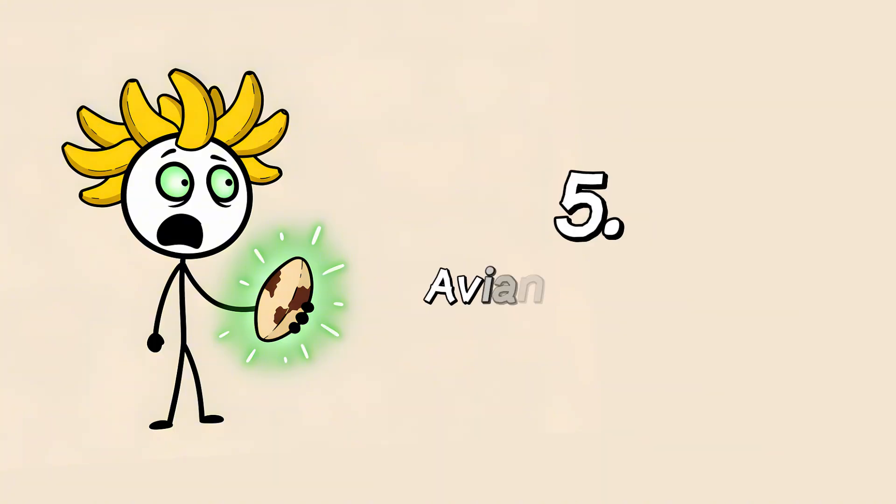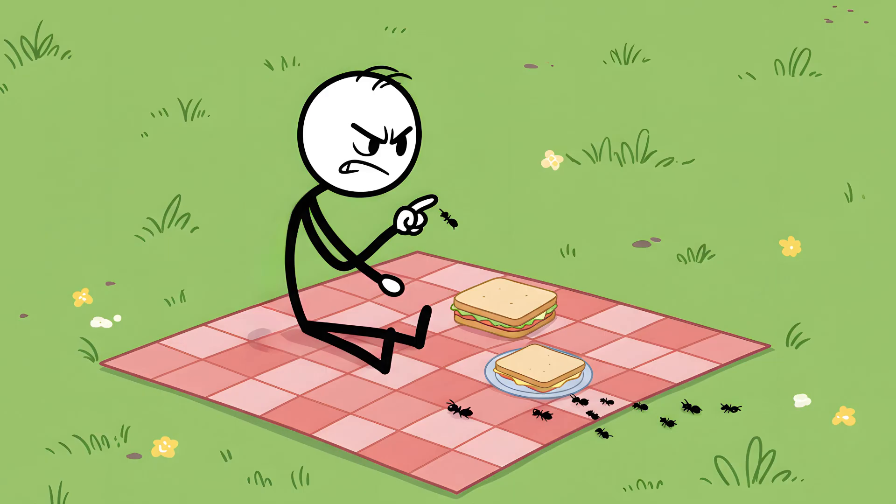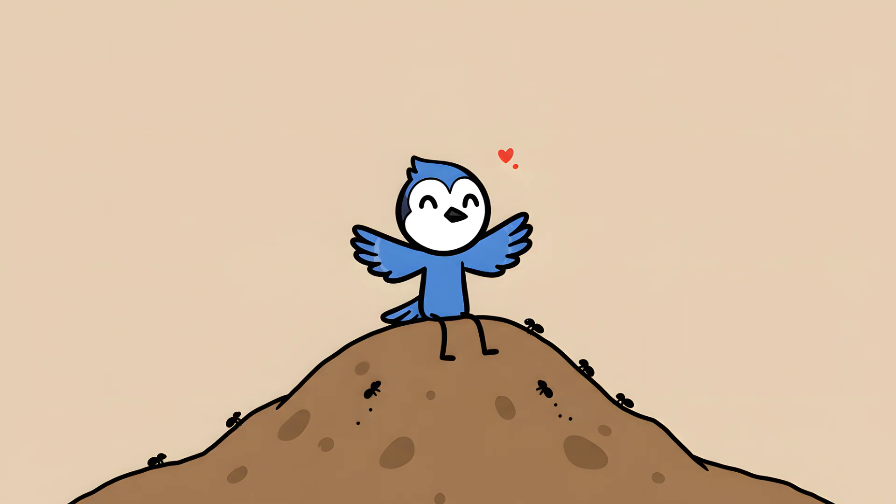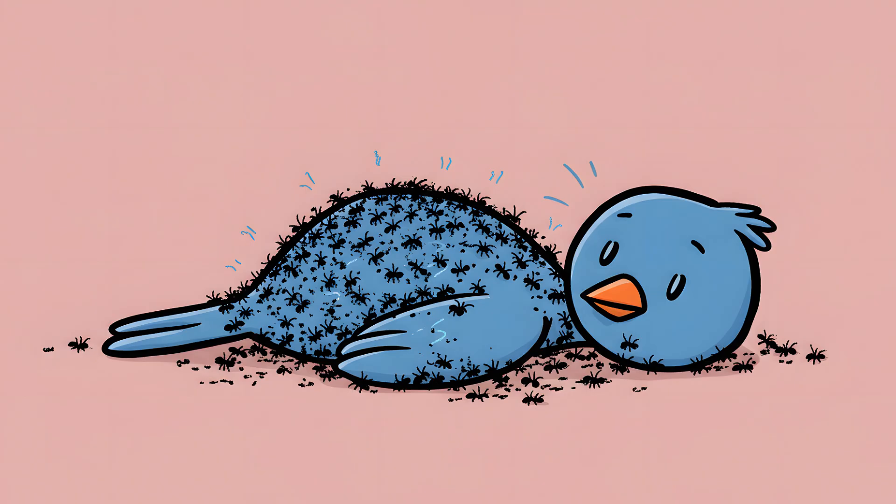Number five, avian ant spas. If you've ever had a picnic ruined by ants, you probably think of them as a pest, a nuisance to be flicked away. But for over 200 species of birds, ants aren't a pest. They are a spa treatment. This behavior is called anting. A bird, like a blue jay or a crow, will find an anthill, poke it to get the ants angry, and then lie down on it, spreading its wings. The furious ants swarm all over it, biting and spraying it with formic acid.